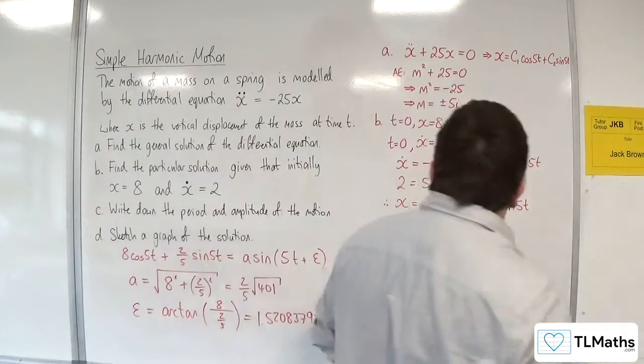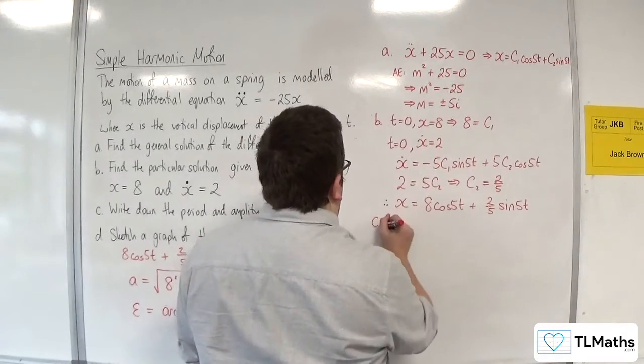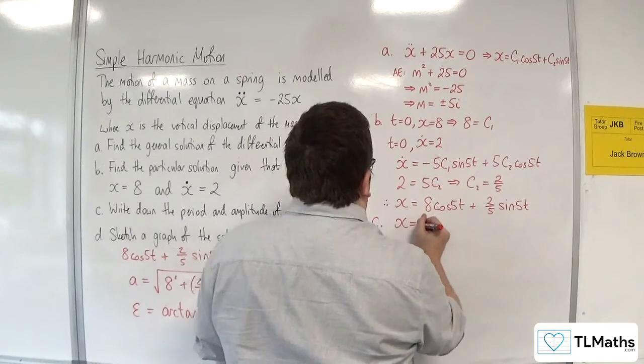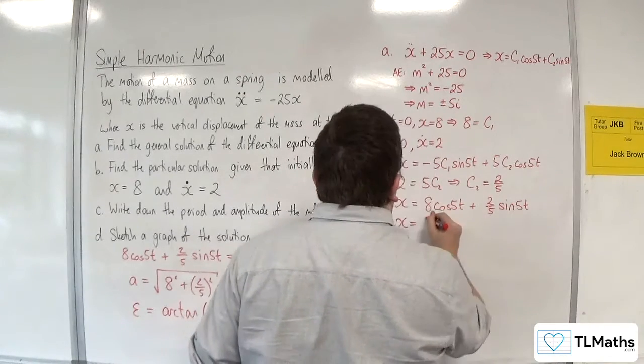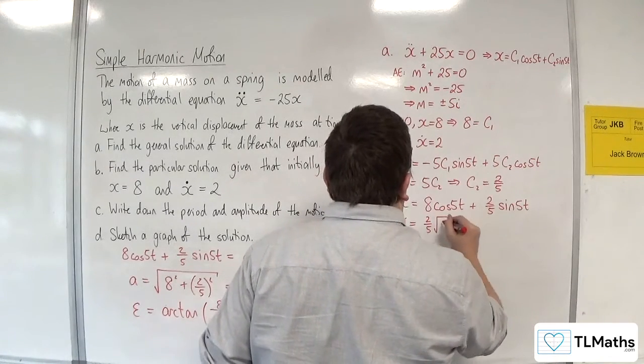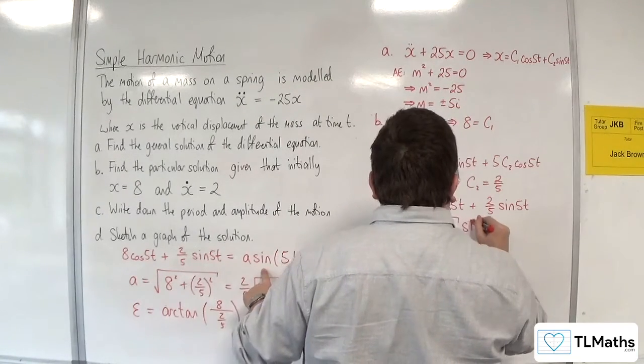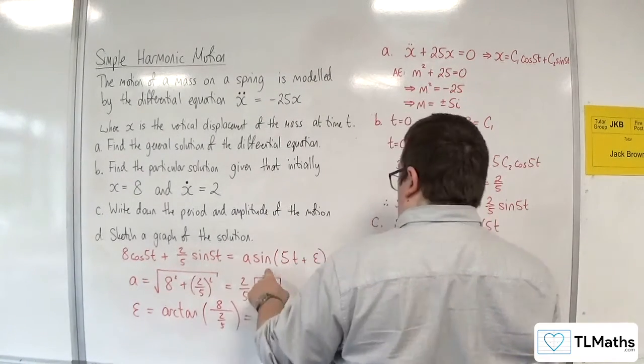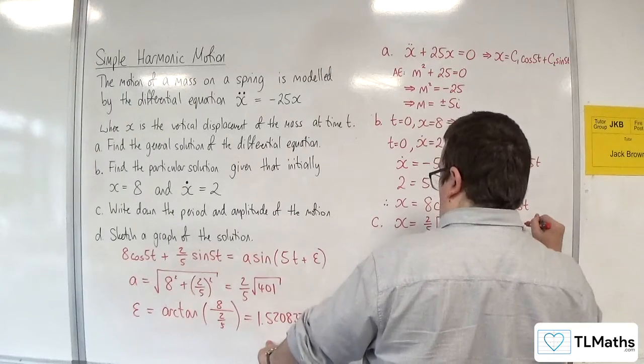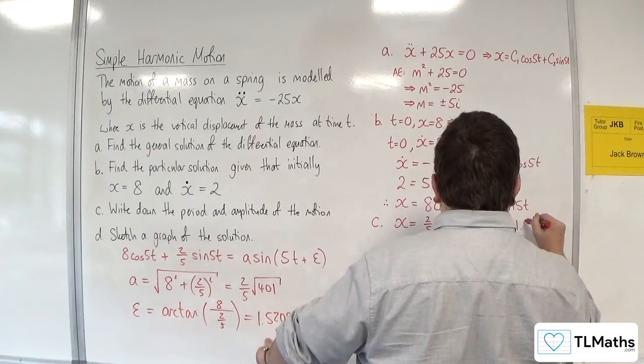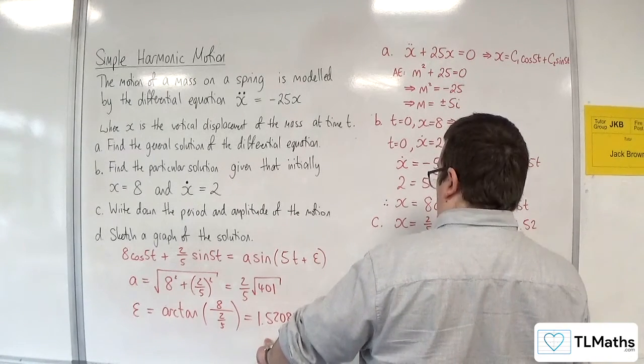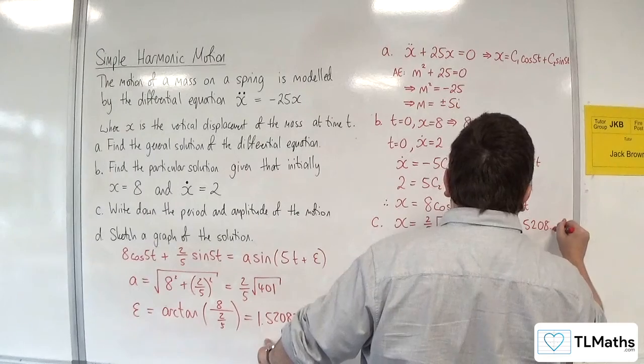So what this is telling me for part C is I can write x as equal to 2/5 root 401 sine of 5t plus 1.5208, etc.